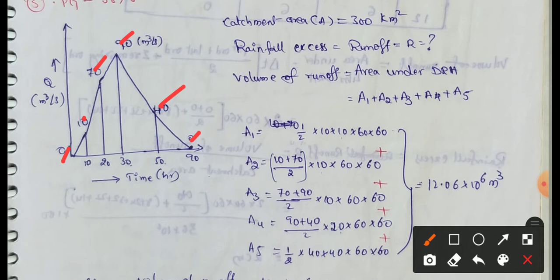These coordinates mean discharges. We will find out the discharges for each discharge. We will find out the base time. The first time is 0 to 10.